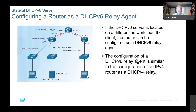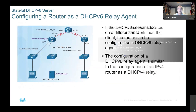We also need DHCP relay agents. If the DHCPv6 server is located on a different network than the client, the router can be configured as a DHCPv6 relay agent. The configuration of a DHCPv6 relay agent is similar to the configuration of an IPv4 router. We put it on this interface right here to allow this PC to get out of this network to reach the server.